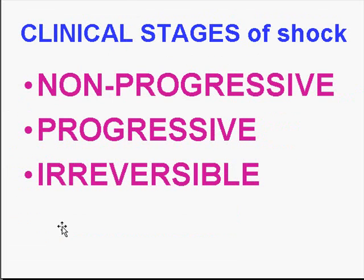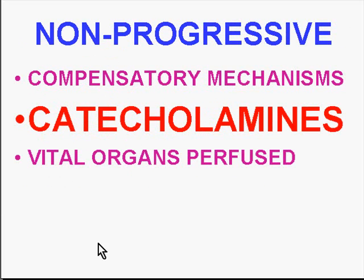If you want to look at clinical stages of shock in terms of prognosis and treatment: there's a non-progressive stage, a progressive stage — both reversible, although non-progressive is a lot easier to reverse than progressive. In the non-progressive stage you have a variety of compensatory mechanisms, the most important of which is the release of catecholamines to try to raise perfusion, and the vital organs are still being perfused.